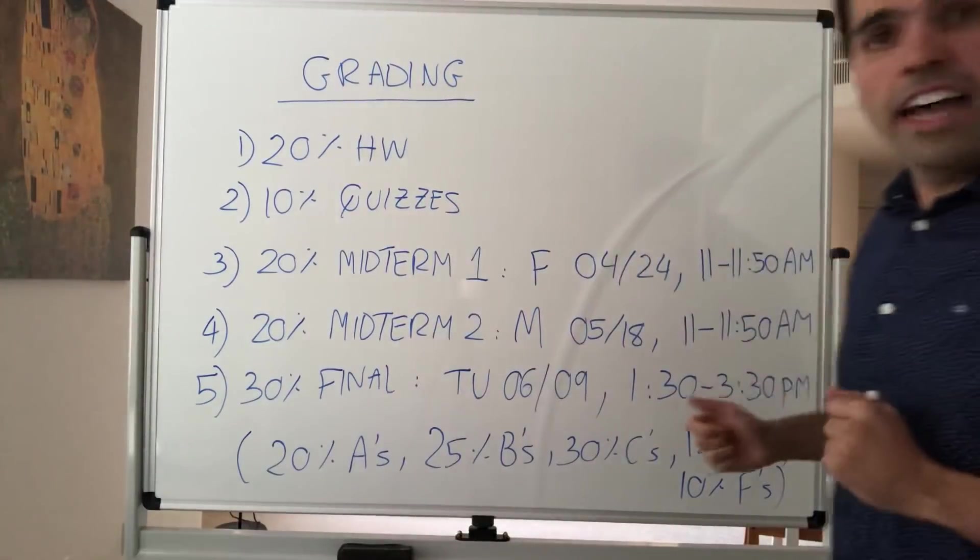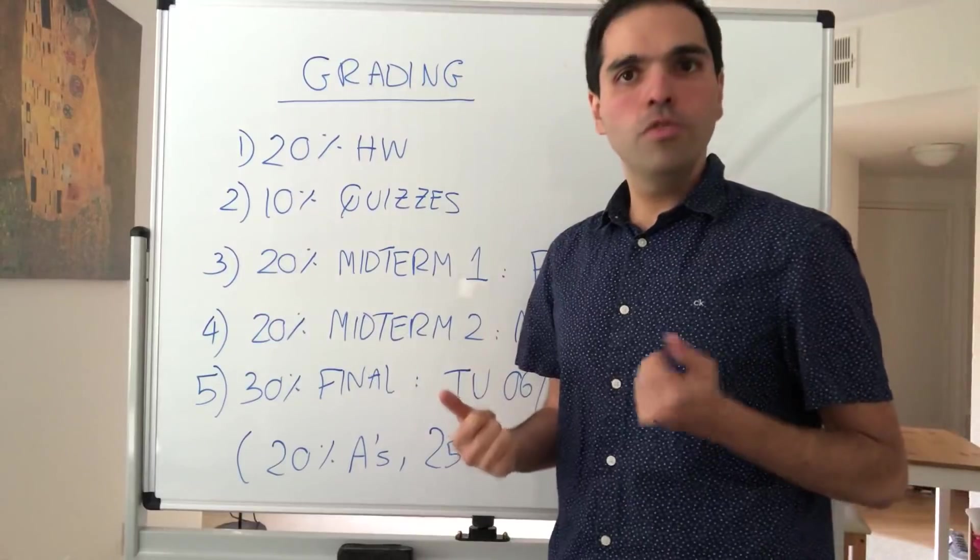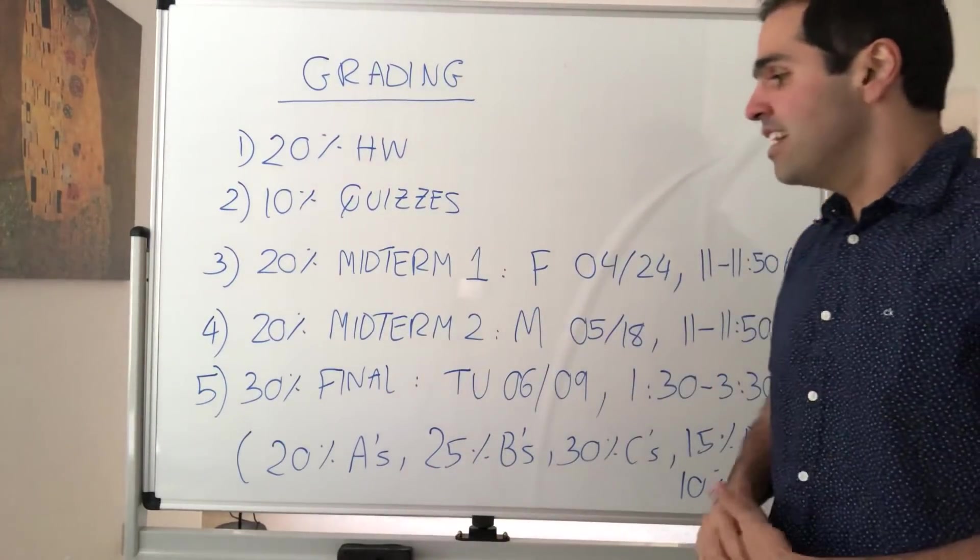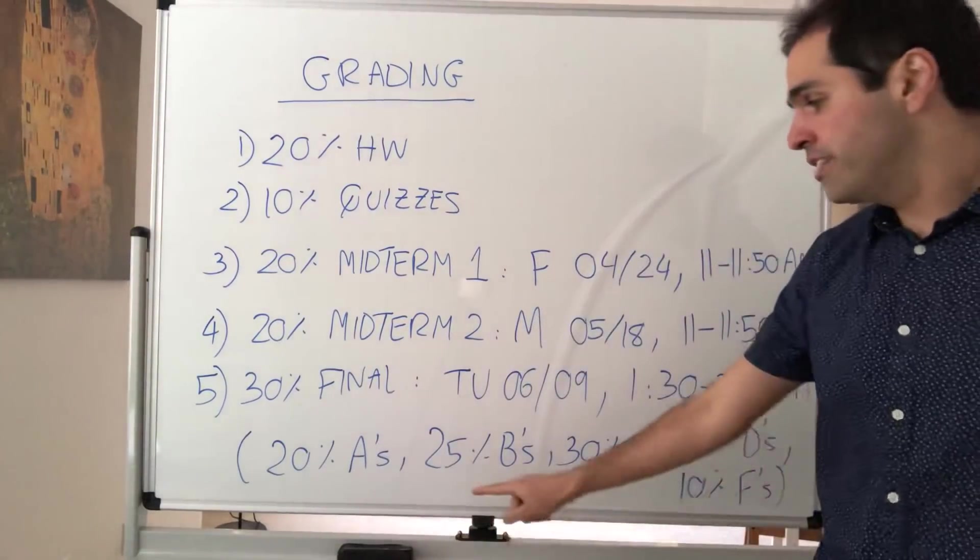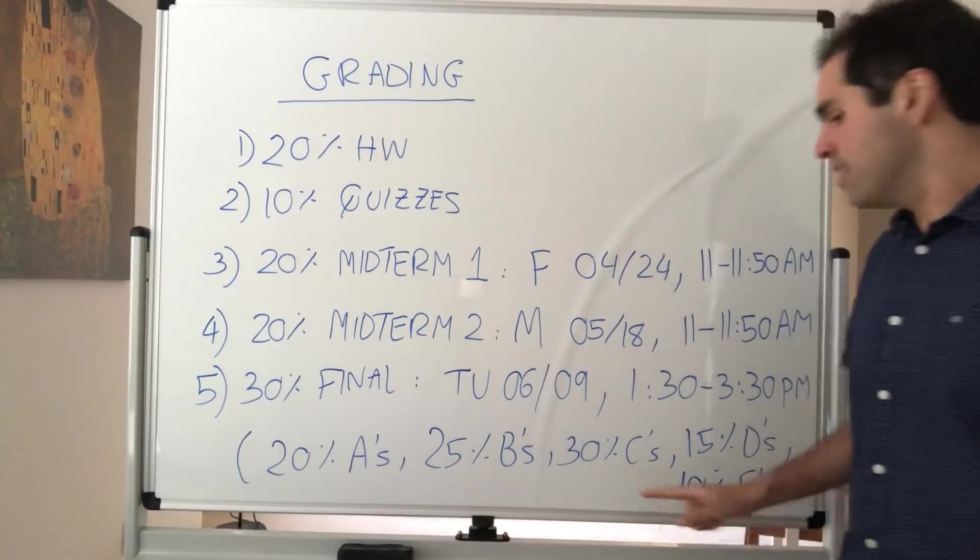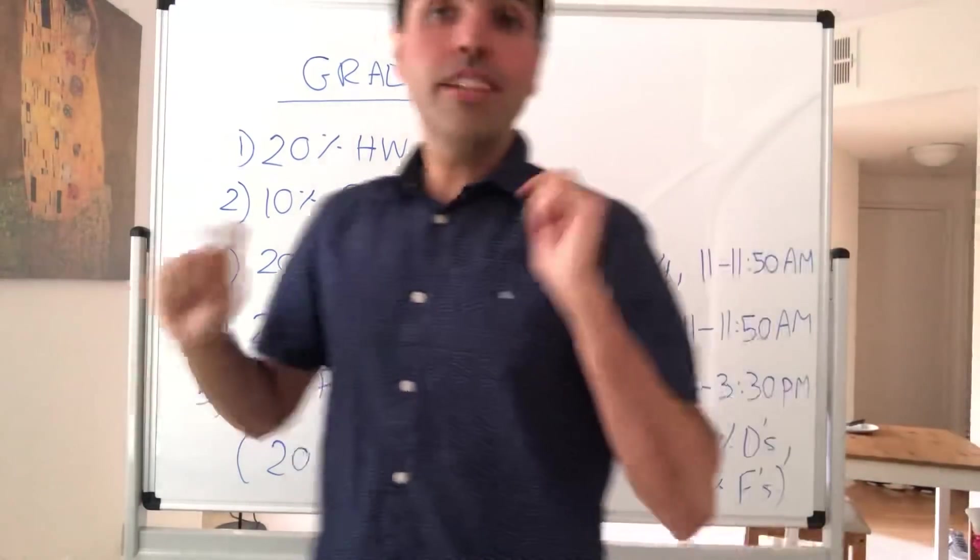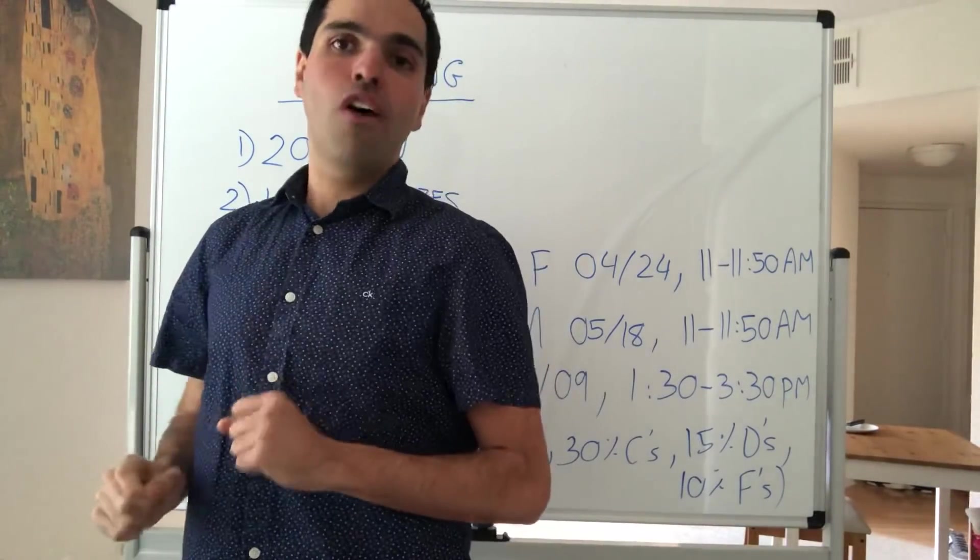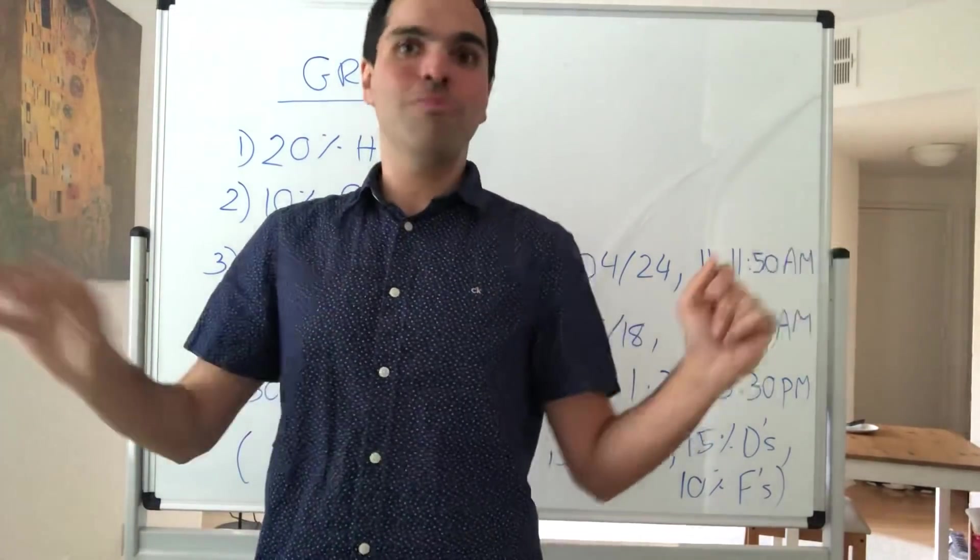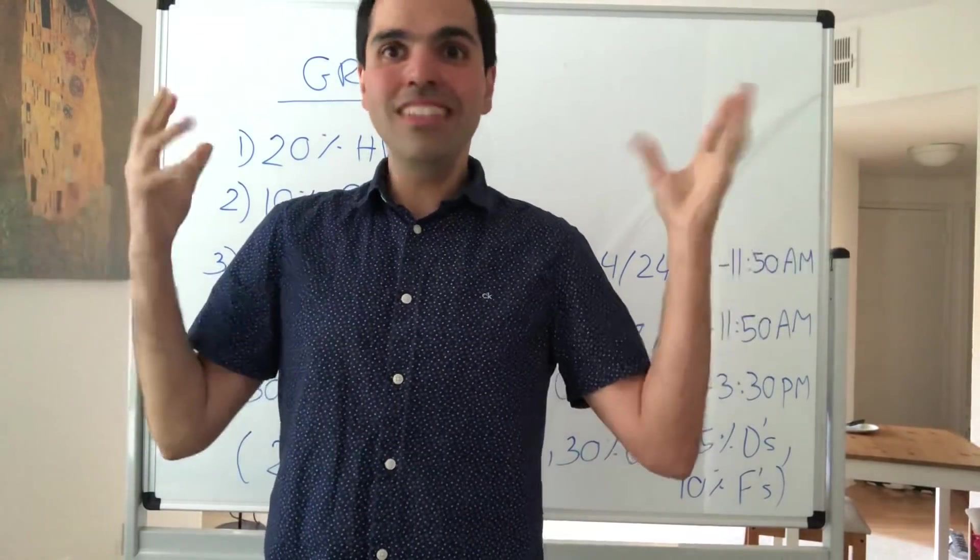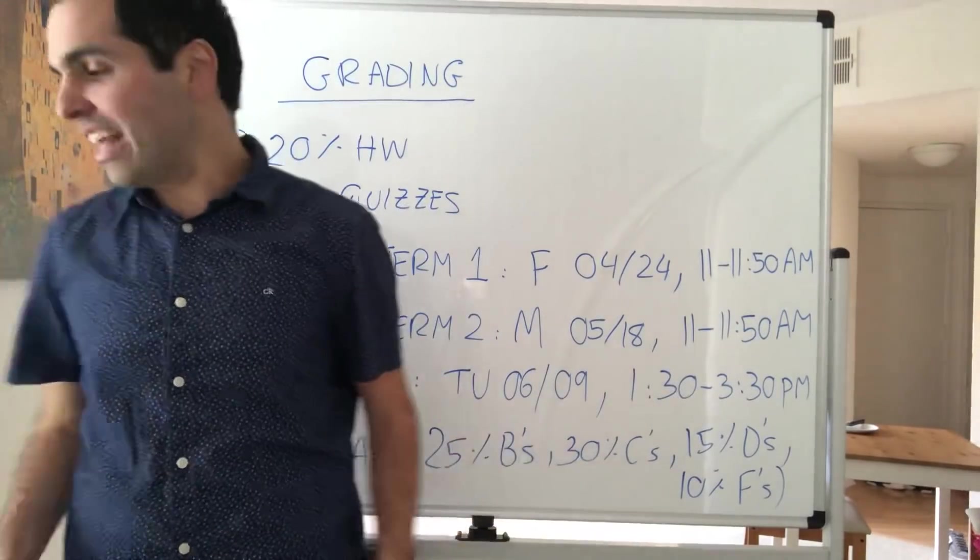And of course, once you add up everything, you get a raw score out of 100. And that score is very likely to be curved, again, because it's a hard class. And I will follow the standard math department curve, which is 20% A's, 25% B's, 30% C's, 15% D's, and 10% F's. And I just want to emphasize, everyone is supposed to follow that math department curve. So there's no such thing as an easier professor. Sure, a professor might seem easy, homework and exam wise, but then in the end, you might be screwed because of that curve.